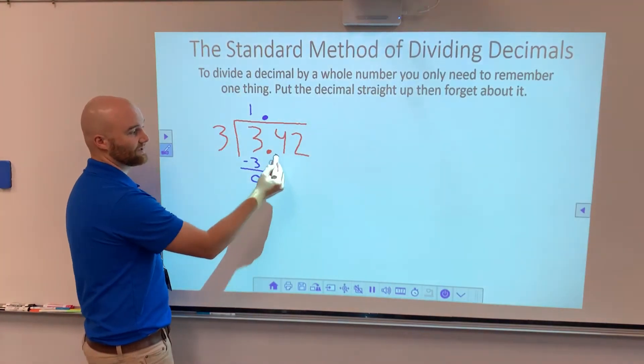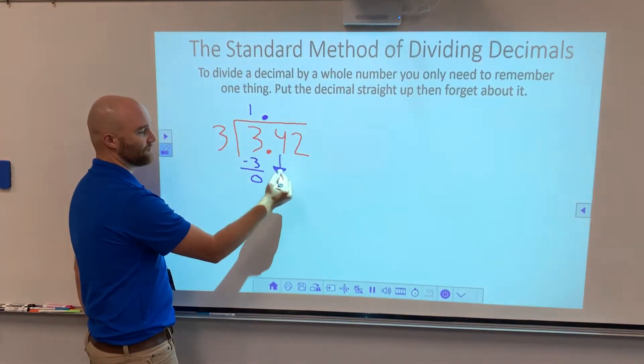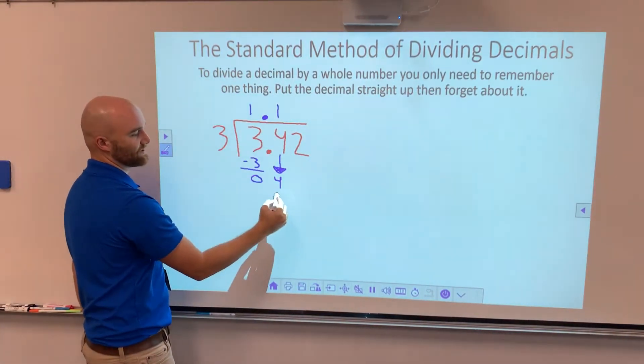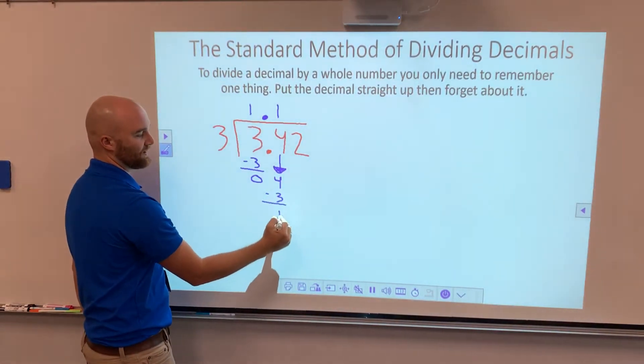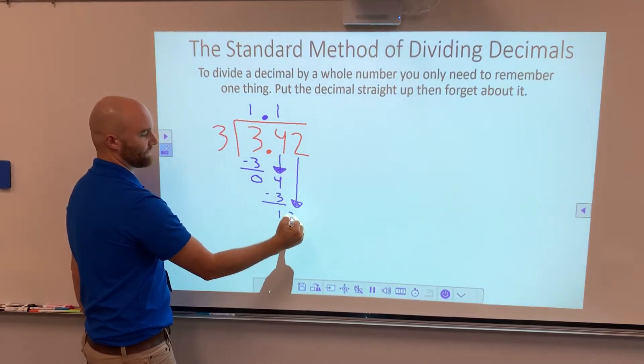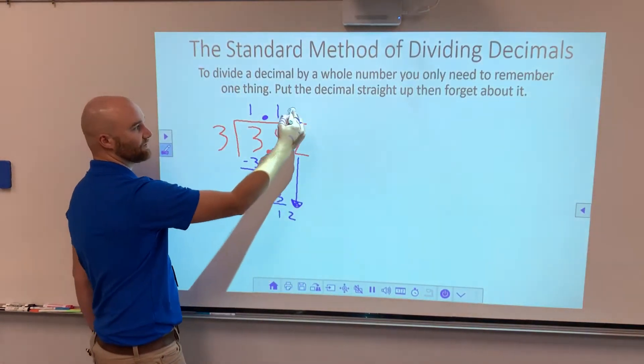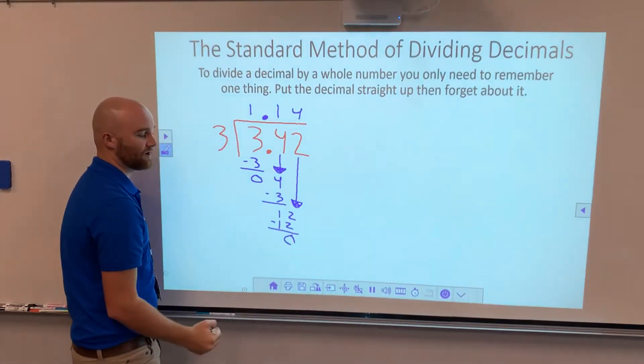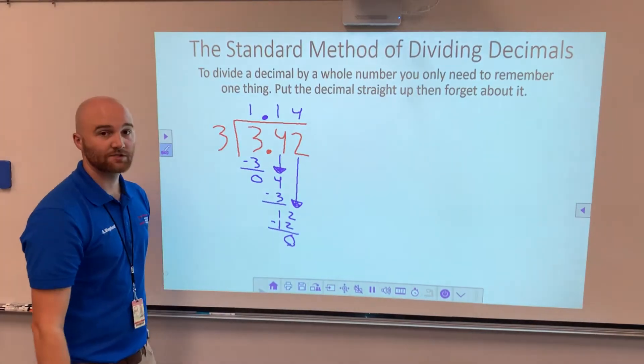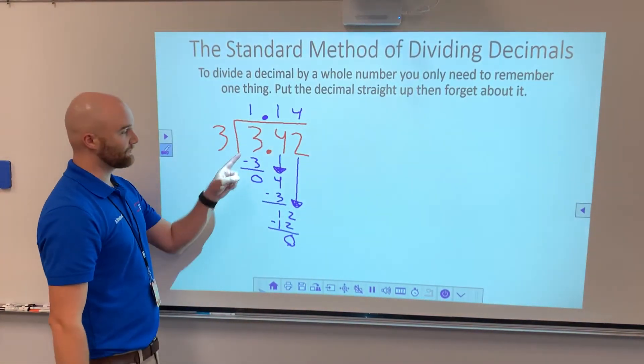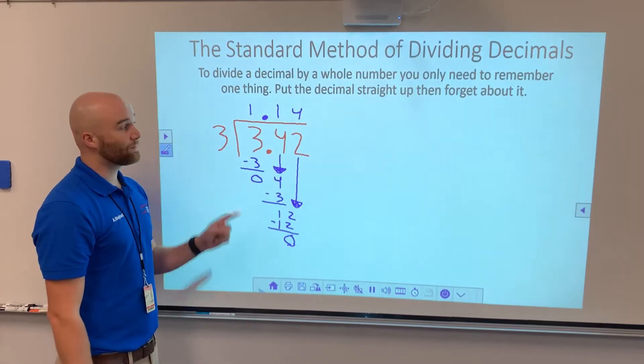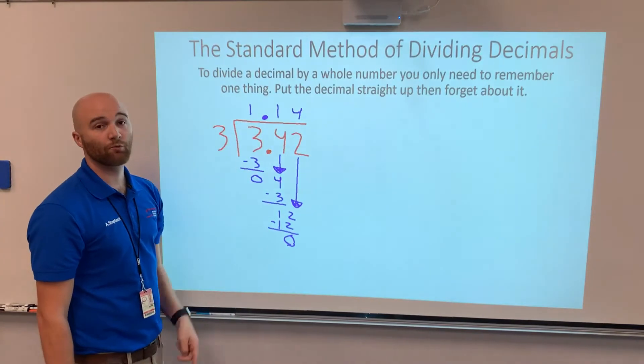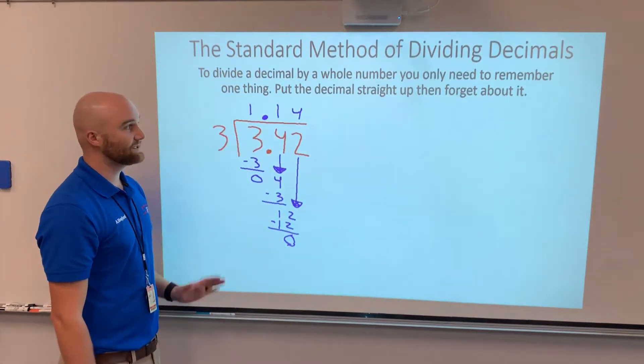We can't stop because we still have things to bring down, so I bring down this 4. 3 goes into 4 one time. 3 times 1 gives us 3. We do our subtraction. We have a 1 and we bring the 2 down. Then 3 goes into 12 a total of 4 times because 3 times 4 gives us 12. We do our subtraction. We have a 0 and nothing else to bring down, so we know we're done with our division. All we did was put our decimal straight up and then made sure the numbers stay nicely lined up above what we divided. It's as easy as that.